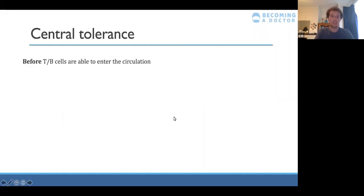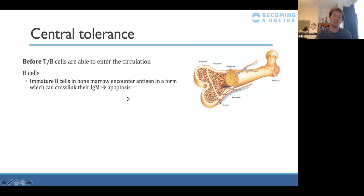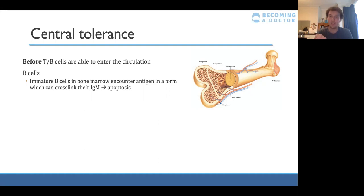Central tolerance happens before T cells or B cells enter the circulation. For B cells, this occurs within the bone marrow — if an immature B cell's IgM receptor cross-links with any antigen there, it means that B cell would produce an immune response against your own body's cells. To prevent this, that B cell undergoes apoptosis, ensuring it never enters circulation and never gets the chance to damage your own cells.